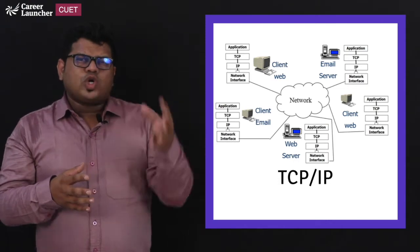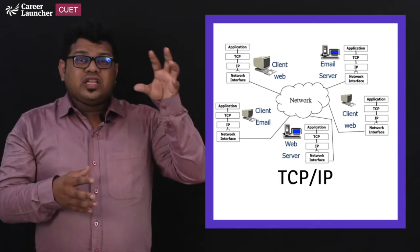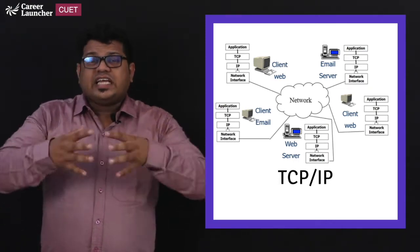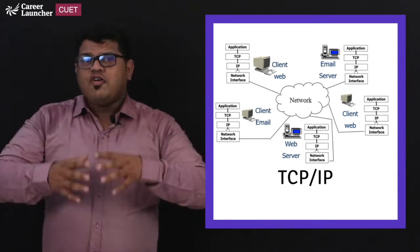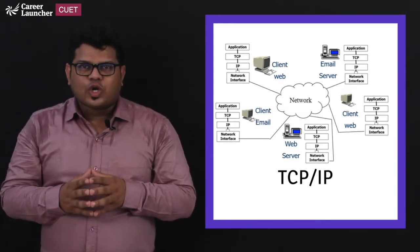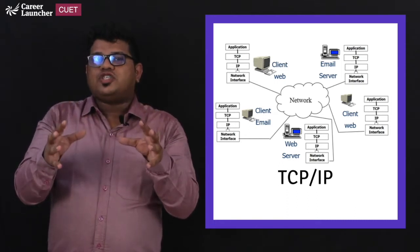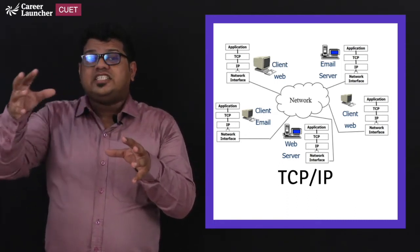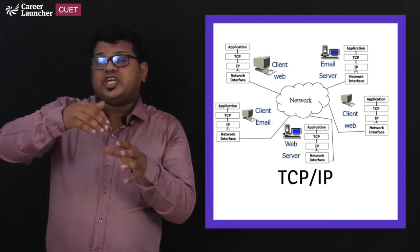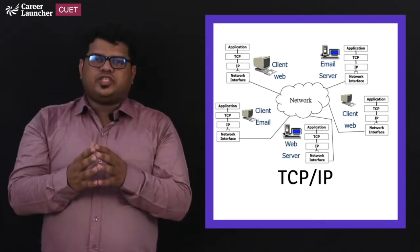Transmission control protocol takes all these actions of allocating, reallocating, arranging these packets. Whereas internet protocol is going to manage the source and destination and make the information to reach its destination. Knowing this, the next part: what are the factors involved in this communication?